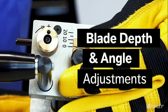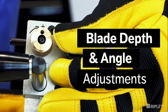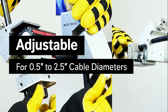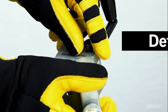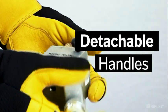Convenient blade depth and angle adjustments easily accommodate a variety of jacket and insulation thicknesses. The Infinity removes the jacket and insulation from cable ends, as well as insulation from the mid-span on overhead cables. Ergonomic handles provide leverage and easily detach in tight areas.